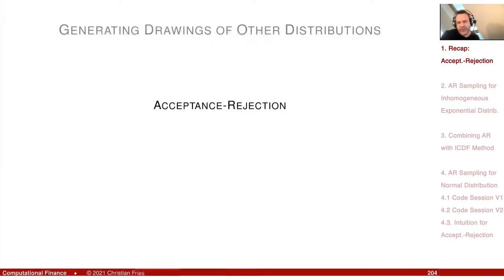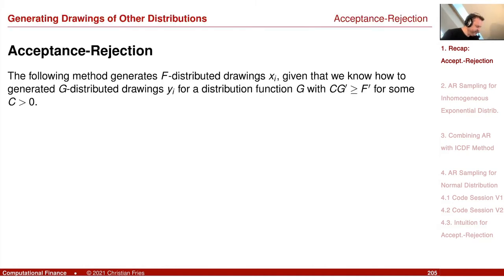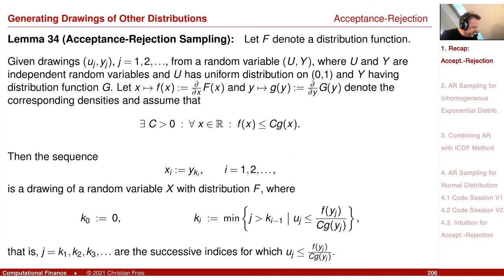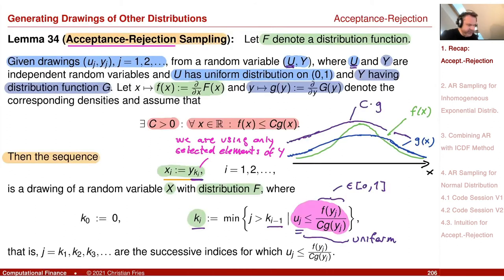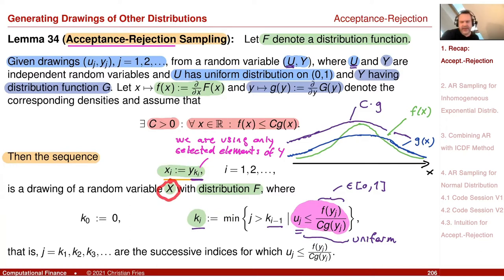We started discussing acceptance-rejection: I showed you the lemma, we proved it, and gained some insight. Our aim is to sample a sequence x_i of a random variable x that has distribution function f. This is the density of f, but we cannot use the inversion of the distribution function — we may know the density but not the distribution function, or we do not know the inverse.